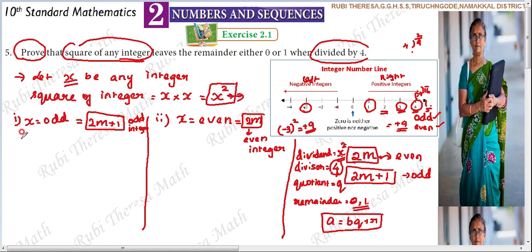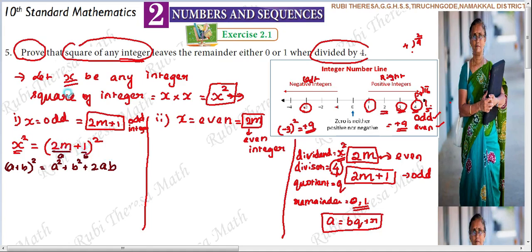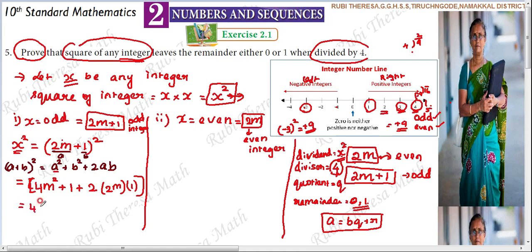For Case 1, x is odd, so x equals 2m plus 1. We find x squared equals (2m plus 1) whole squared. Using the formula (a + b)² = a² + 2ab + b², where a = 2m and b = 1: x squared = (2m)² + 2(2m)(1) + 1² = 4m² + 4m + 1.